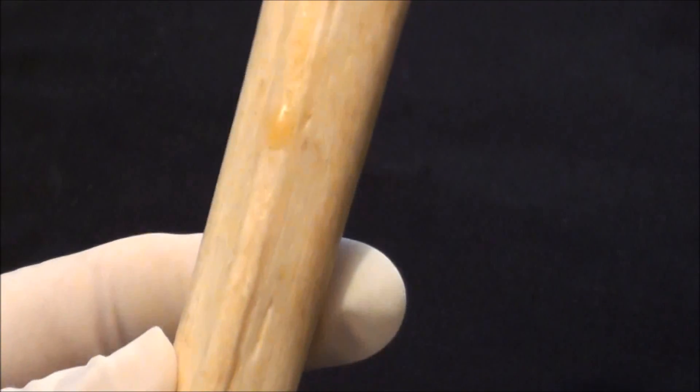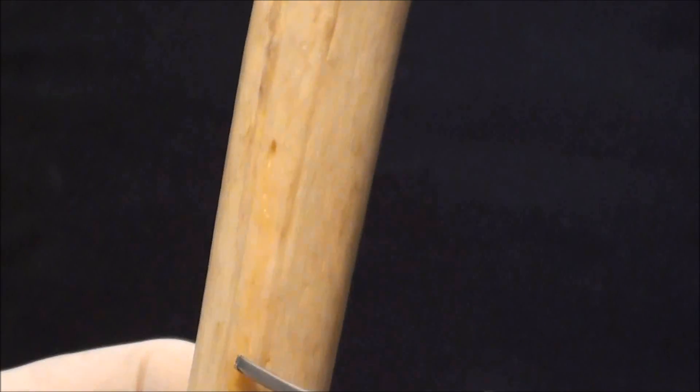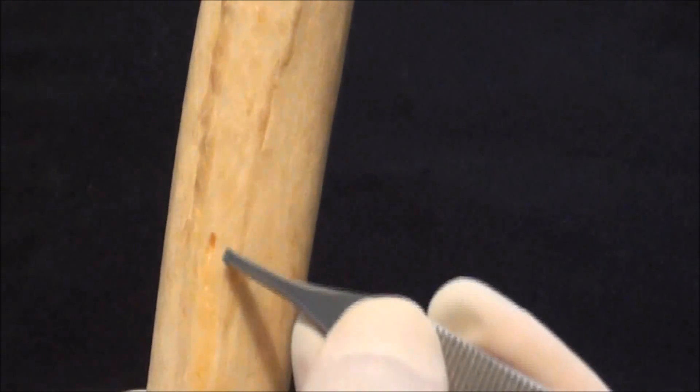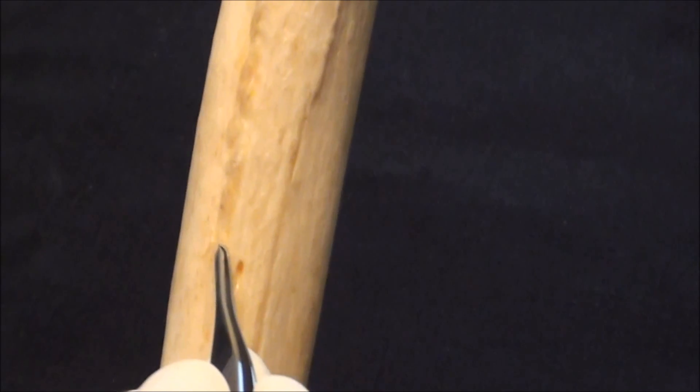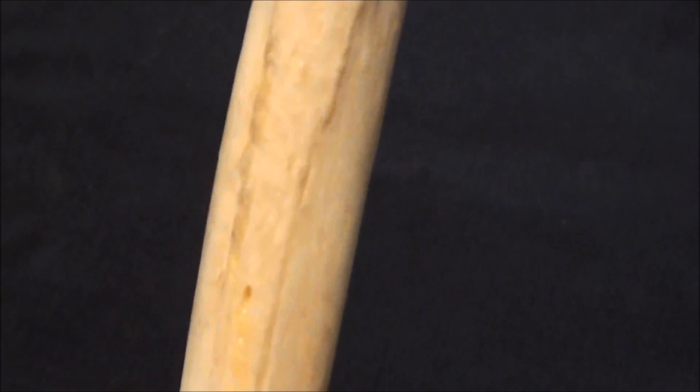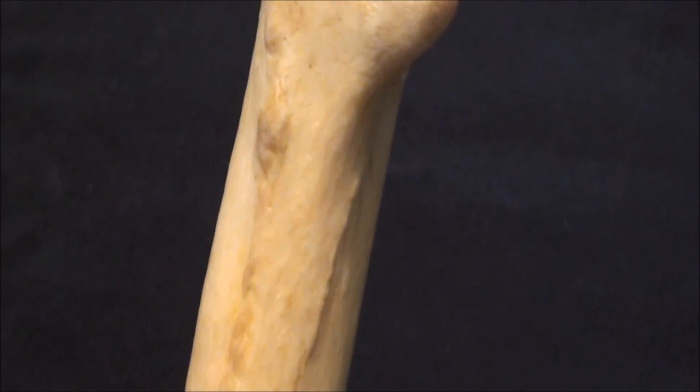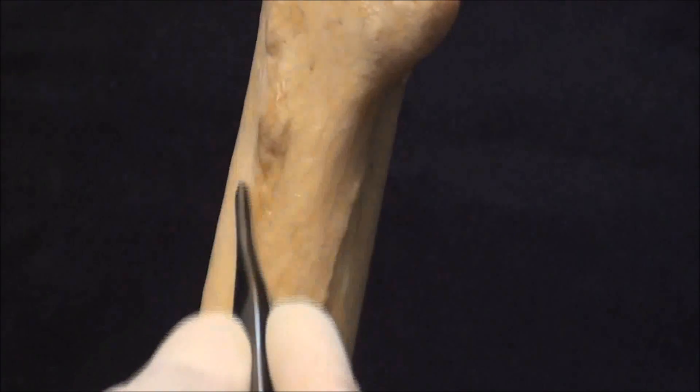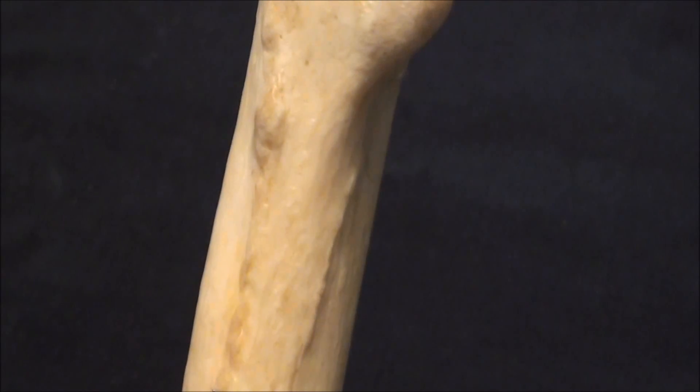As we follow the linea aspera superiorly we'll find out that it starts splitting into two lips. The medial lip which is directed towards medial side and the lateral lip of the linea aspera that will be directed more laterally. The lateral lip continues upwards towards the greater trochanter but it really ends up here on the area of the bone showing also massive elevated parts which is called the gluteal tuberosity. It is insertion for the gluteus maximus muscle.